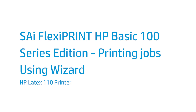SAI FlexiPrint HP Edition is the RIP software included with your HP Latex 110 printer. You can use it to easily produce color-managed prints for a wide range of print applications. It has tools to scale, rotate, tile, and nest print jobs. You can also use the software to fully control and obtain new substrates on your HP Latex printer. This video shows you how to access the main functions of the SAI FlexiPrint HP Basic 100 Series Edition RIP software.